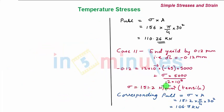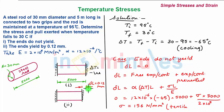And the corresponding pull is 106.7 kilonewtons. This is due to the fact that due to yielding, the steel rod is slightly relieved, so the resulting stress and pull is lesser.